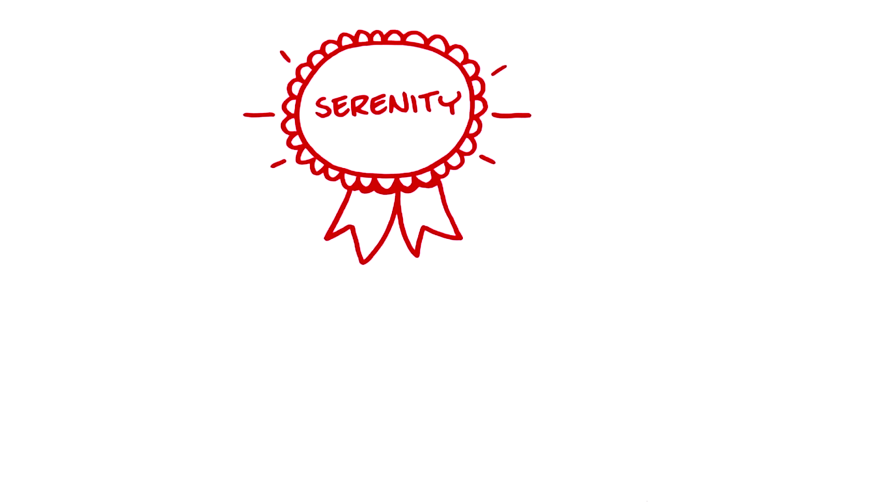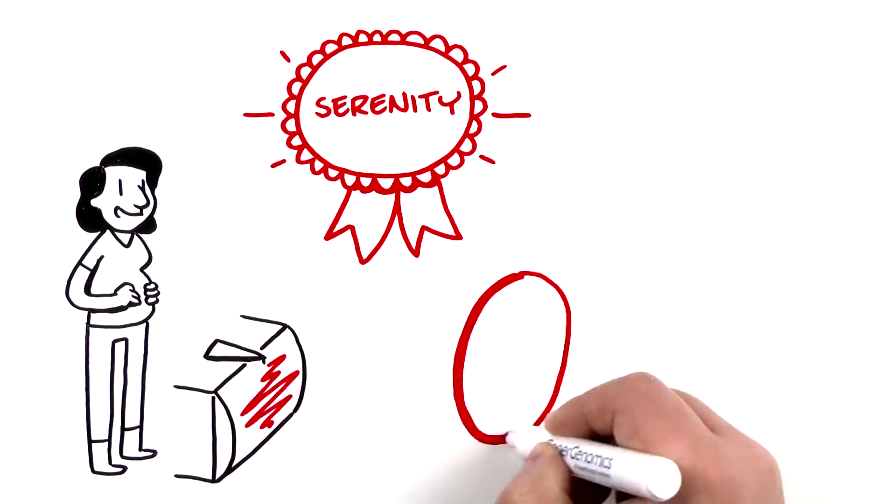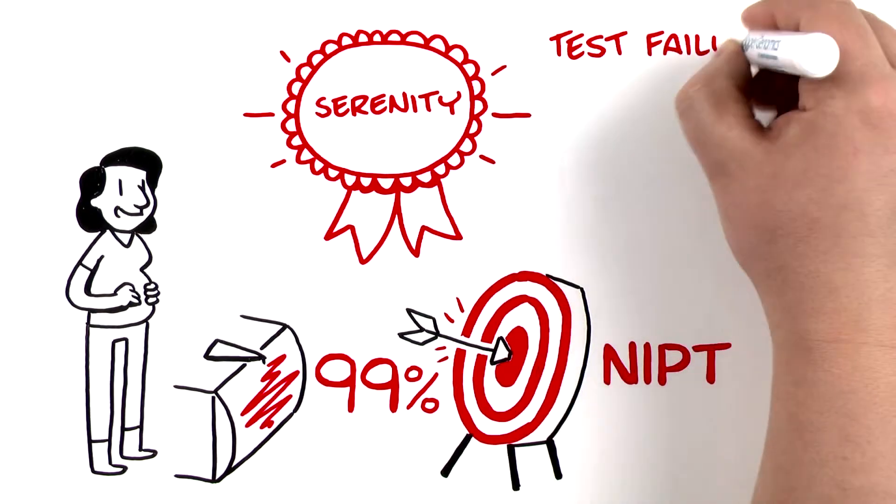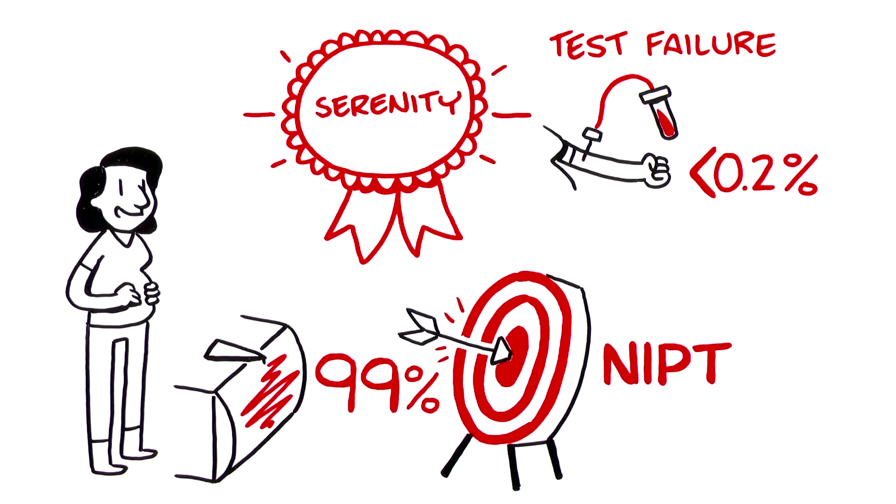Serenity is a trusted choice among parents in the early stages of pregnancy because it's been clinically proven to be over 99% accurate and the rate of test failure, which would require another blood draw, is lower than 0.2%.